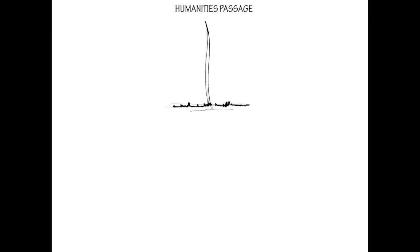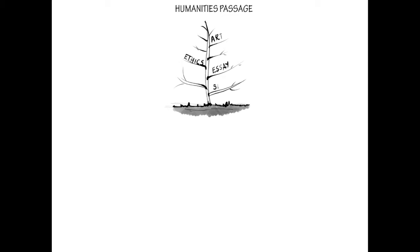The last type of passage is the humanities passage. And like the social science passages, the humanities passages cover a wide variety of topics. A humanities passage could be about art or ethics. It could even be an essay or speech by a famous historian, about a well-known historic moment, or maybe just working through emotions.